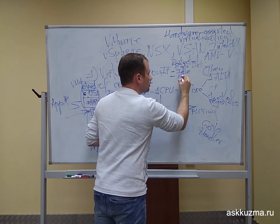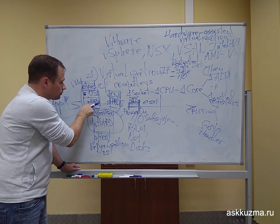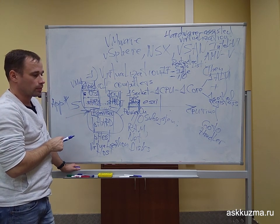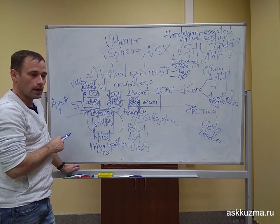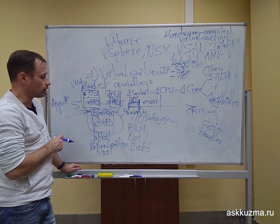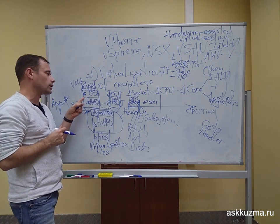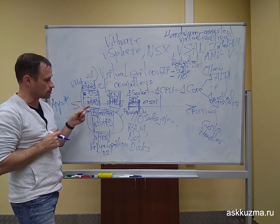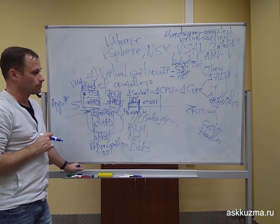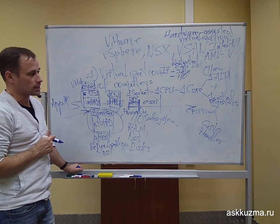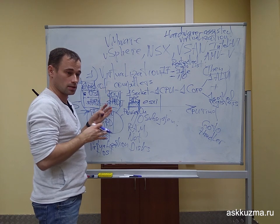The next restricted command is the input-output command. Since the hardware is completely synthetic — except for the physical processor core — every guest operating system's input-output must be intercepted and properly processed by the compute hypervisor. Every time a guest OS tries to access its synthetic RAM, synthetic network subsystem, or synthetic disk subsystem, its input-output is intercepted and handled by the hypervisor. This command, being part of the restricted commands list, guarantees this interception behavior.